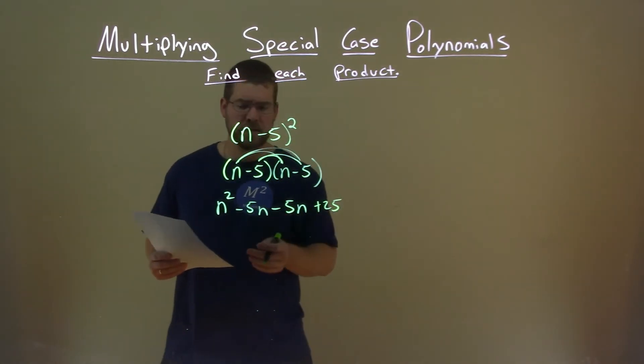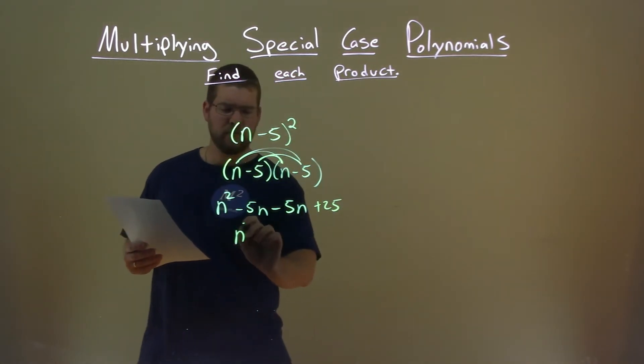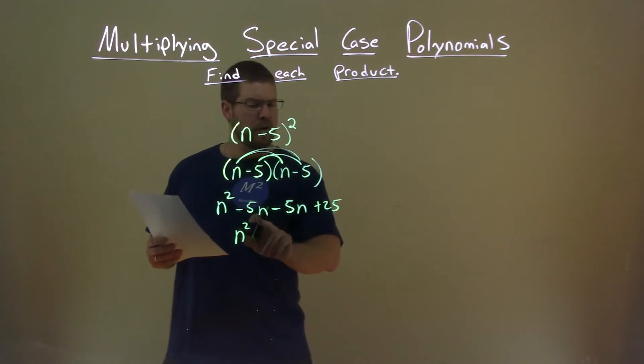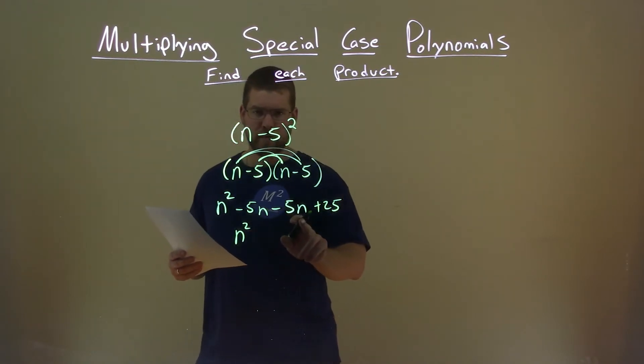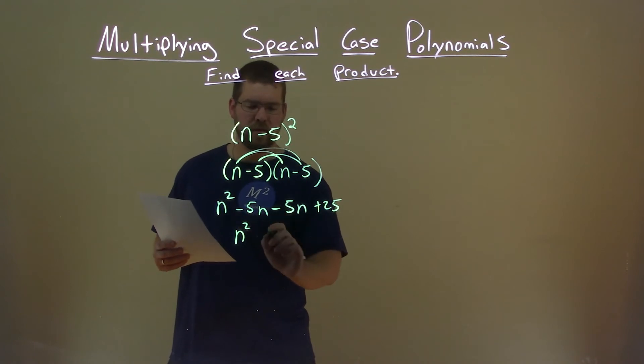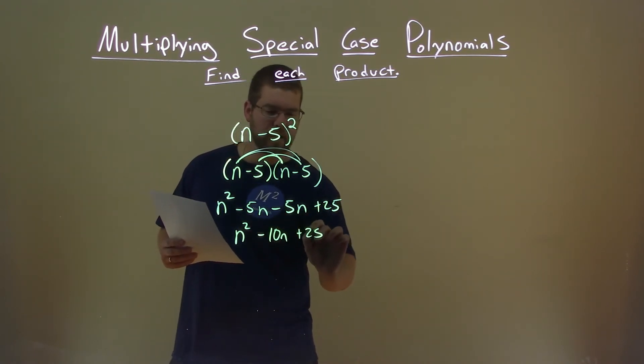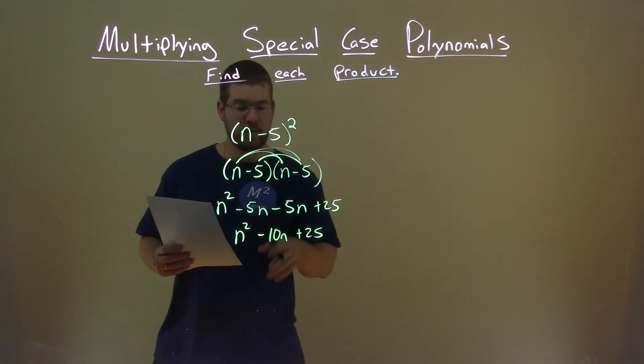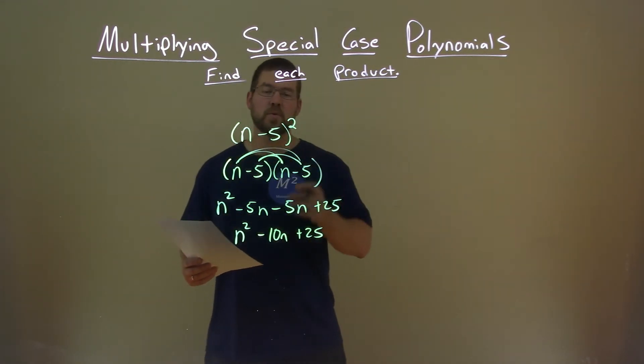Almost there. Combine our like terms. n squared's by itself, nothing to combine. But we have minus 5n and minus 5n here. That together, 5 plus 5 is 10, stays negative, negative 10n here. Bring down the 25, and we get our final answer of n squared minus 10n plus 25.